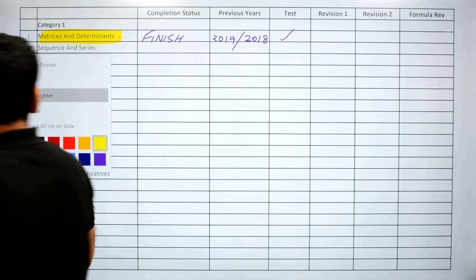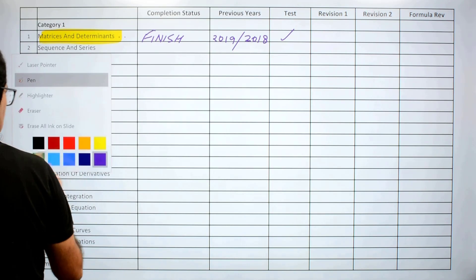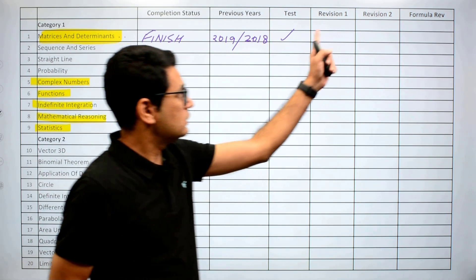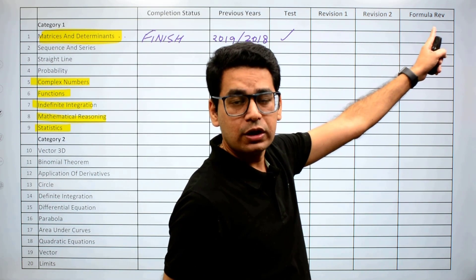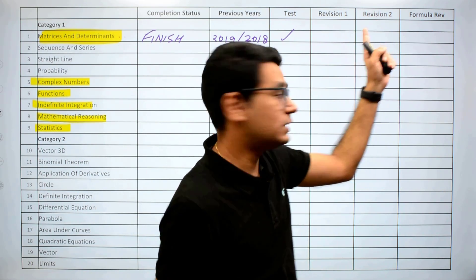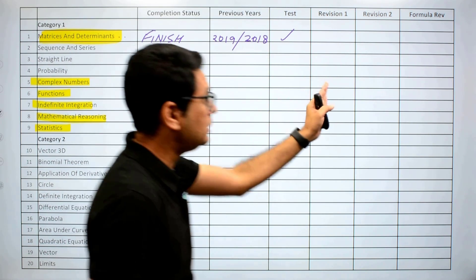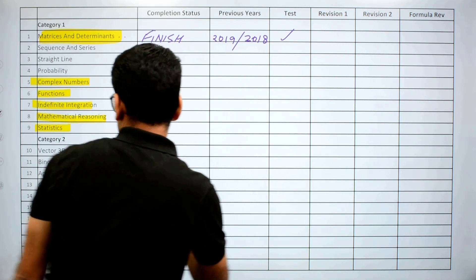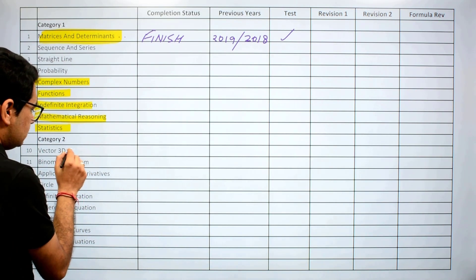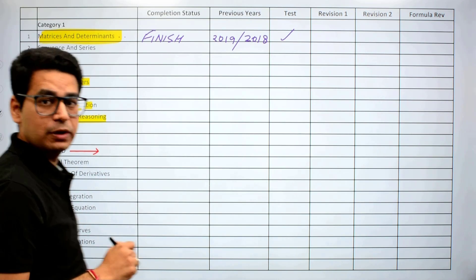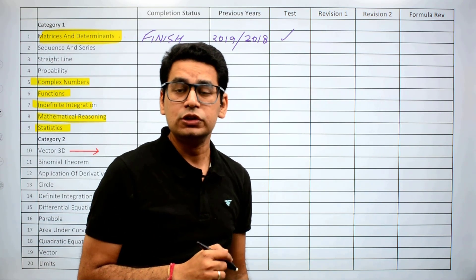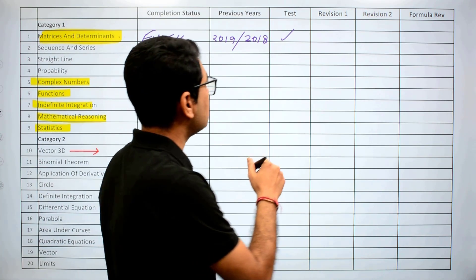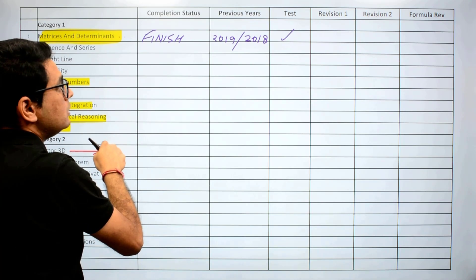Now the important part: once you move into category 2, these three tabs are very important and will give you your rank. The first two or three columns are important, but the remaining three columns are even more important. For example, vector 3D is category 2's first and most important topic. Once you have started doing that, your target should be to keep revising previously done chapters.